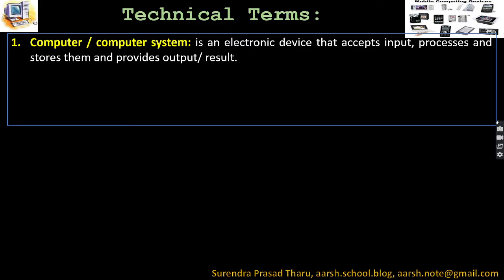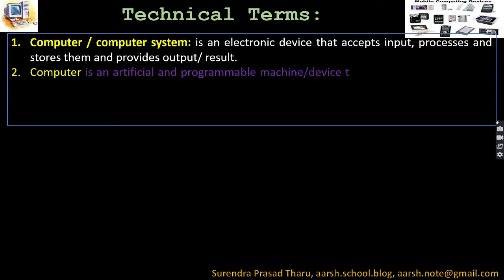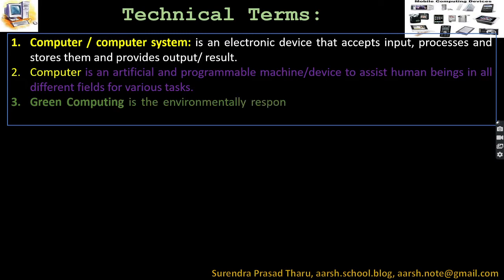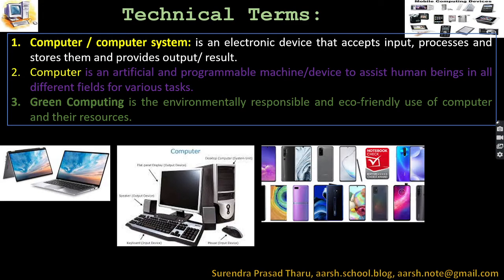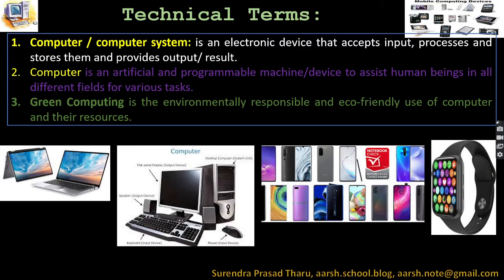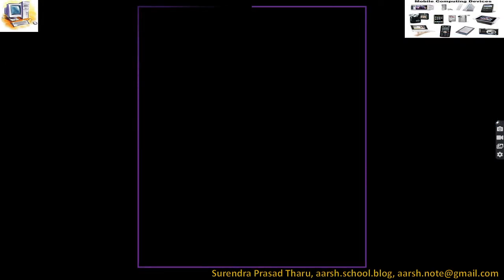A computer is also described as an artificial and programmable machine or device to assist human beings in different fields for various purposes. Green computing is the environmentally responsible and eco-friendly use of computers and their resources. Different computing devices include laptops, tablets, desktops, smartphones, notebooks, notepads, and smartwatches.